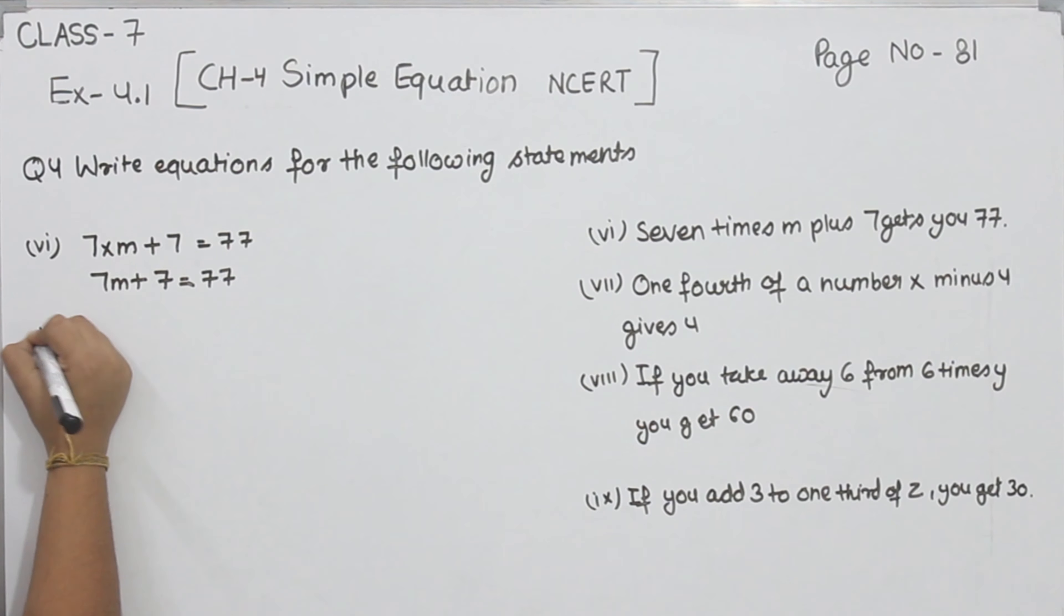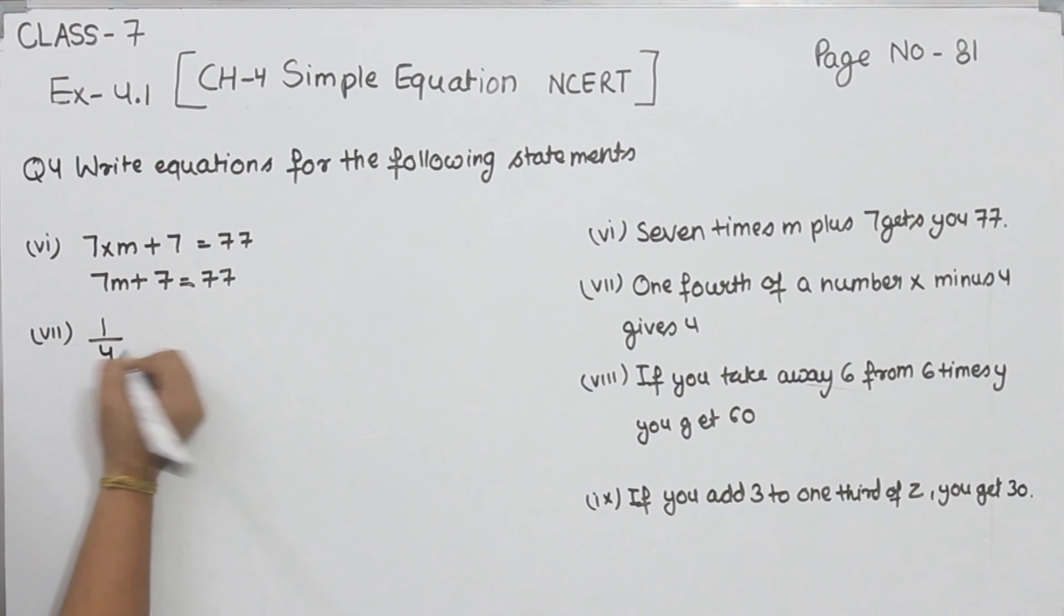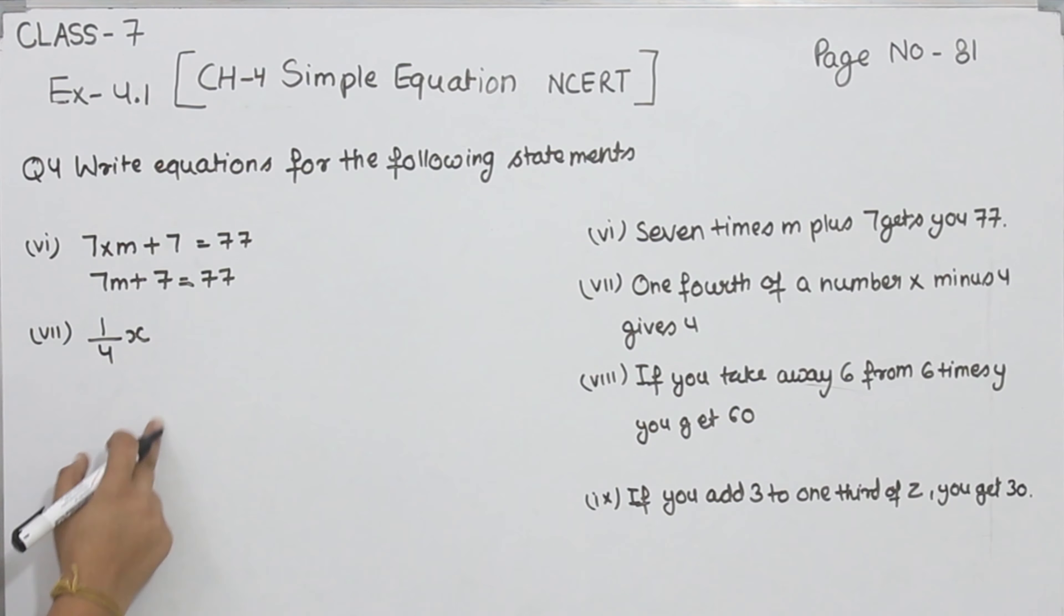Now part 7. One-fourth of a number x, so one-fourth of x, that is 1 by 4 x minus 4 gives you 4. So this is 1 by 4 x minus 4 is equal to 4.